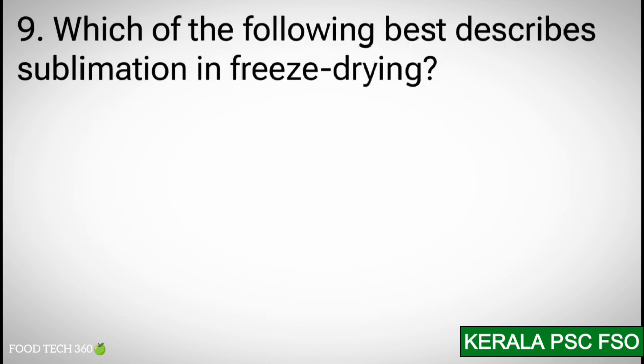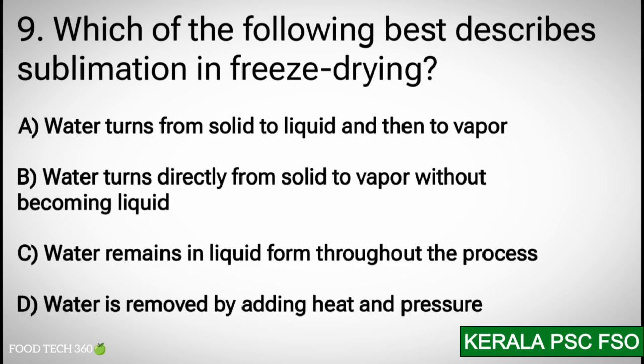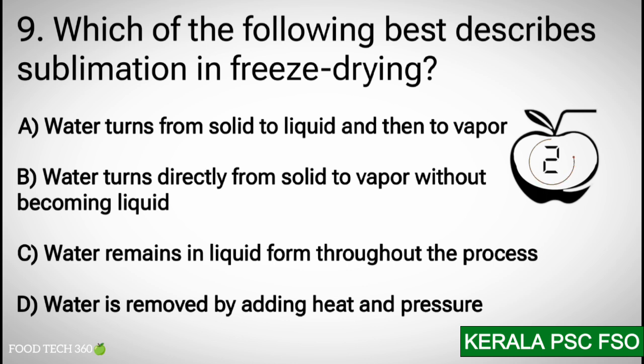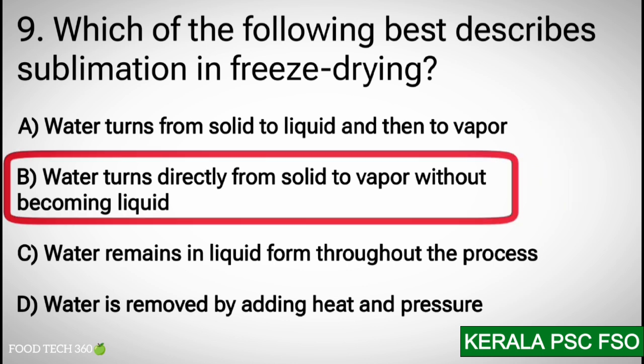Question number 9: Which of the following best describes sublimation in freeze drying? Options: A) Water turns from solid to liquid then to vapor, B) Water turns directly from solid to vapor without becoming liquid, C) Water remains in liquid form throughout the process, D) Water is removed by adding heat and pressure. Correct answer: B) Water turns directly from solid to vapor without becoming liquid.